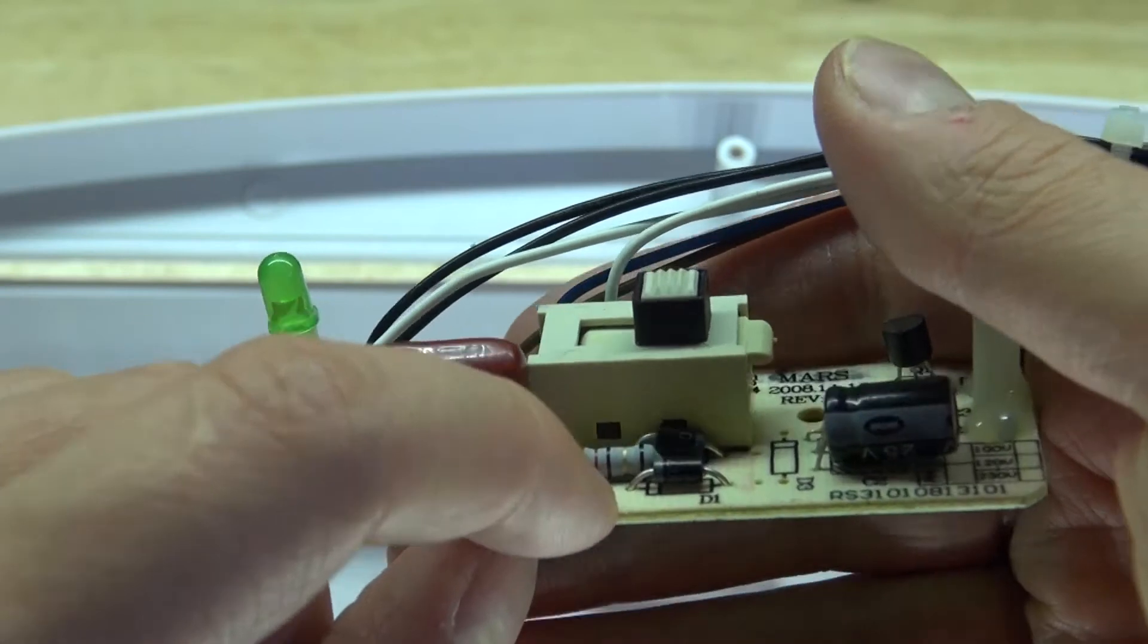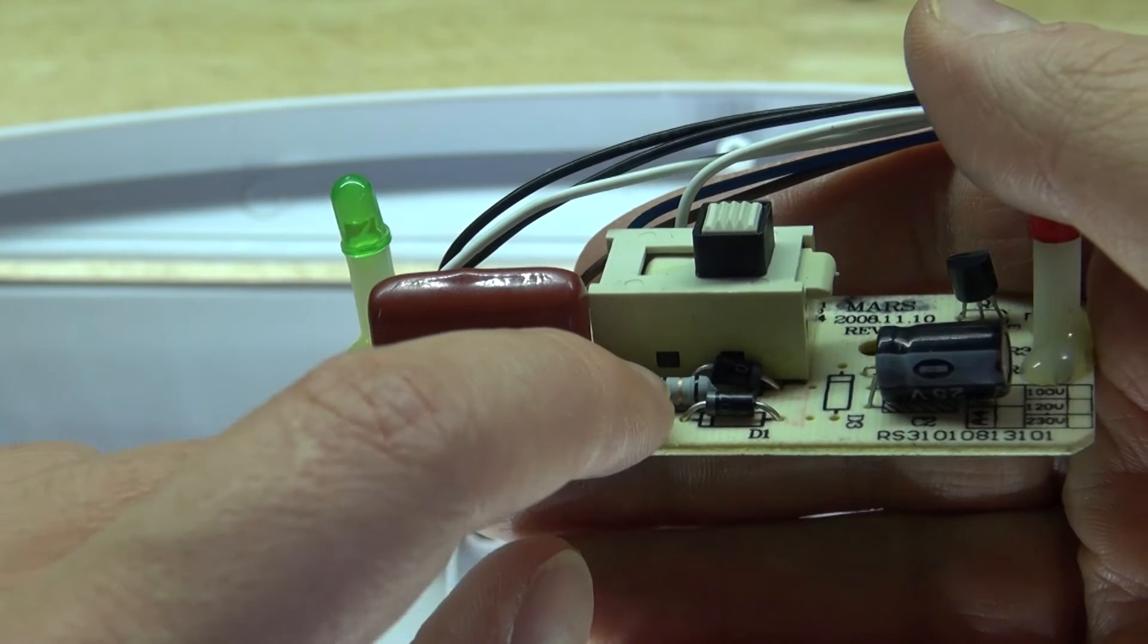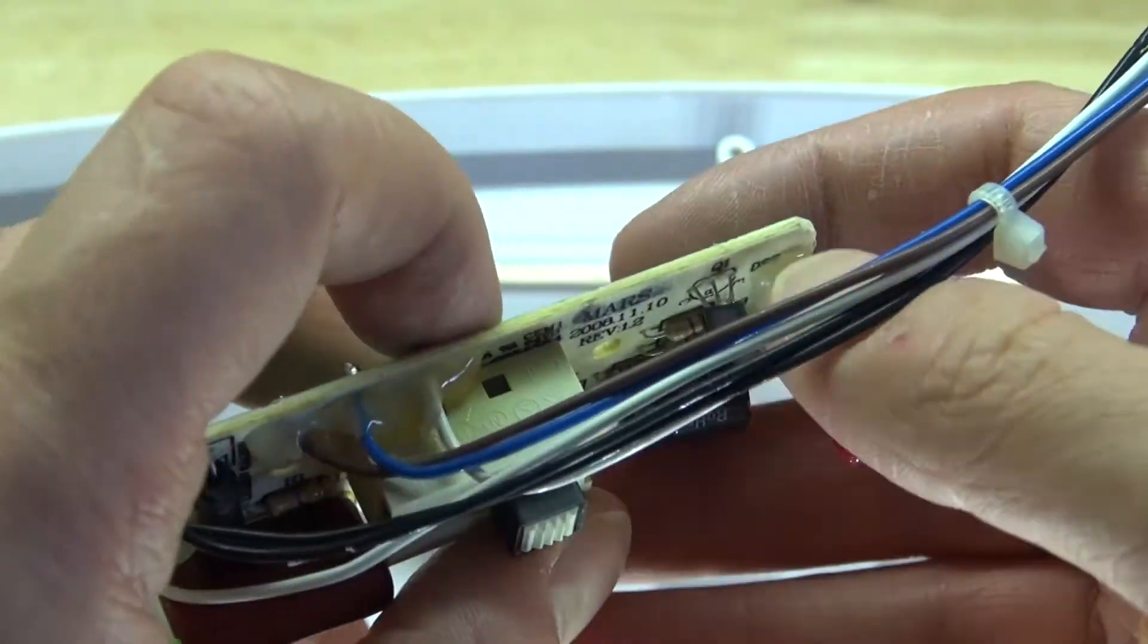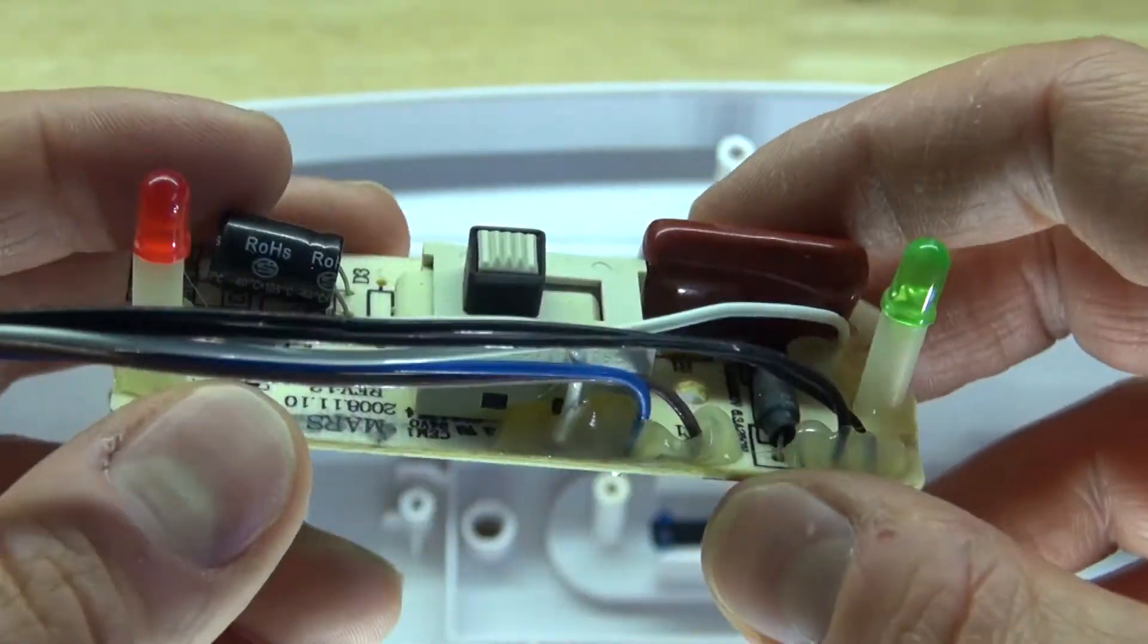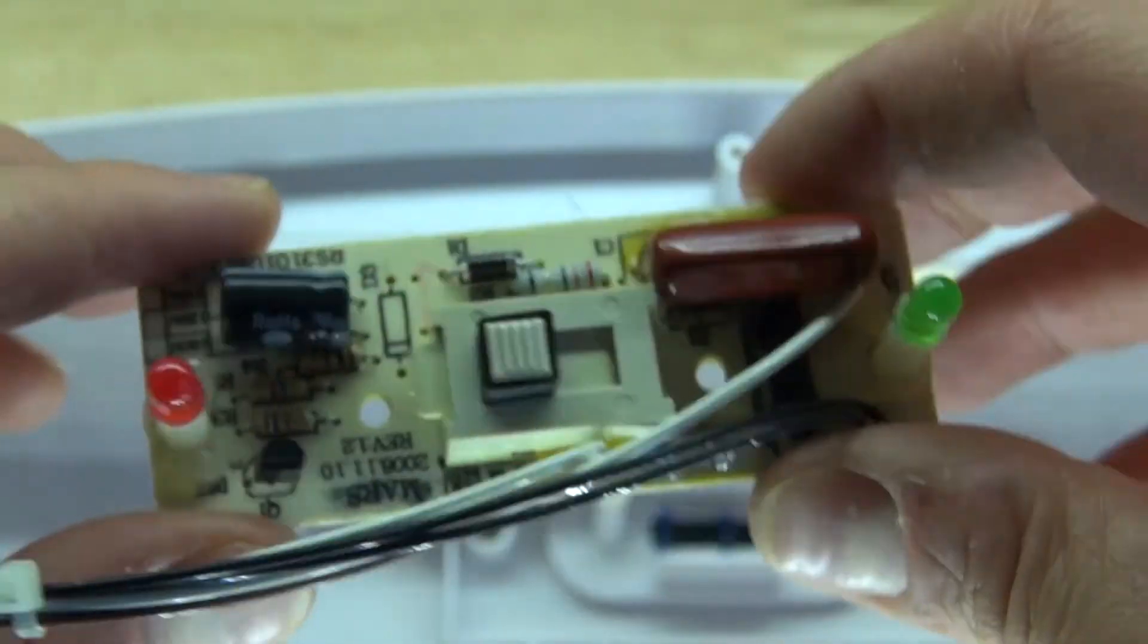A 2 watt resistor, some rectifier diodes, transistor, electrolytic capacitor, some LEDs, more resistors, an inductor, a high voltage capacitor, and this little interesting switch right here.